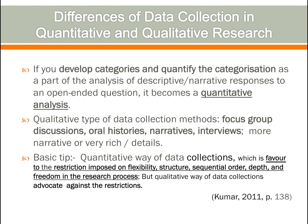The basic difference is that the quantitative way of data collection favors restrictions imposed on flexibility — structured, sequential order — whereas the qualitative way of data collection advocates against these restrictions, allowing more depth and freedom in the research process.